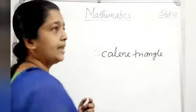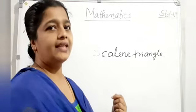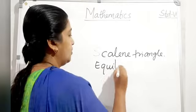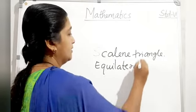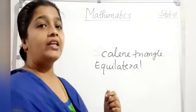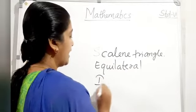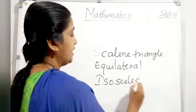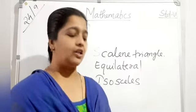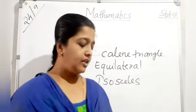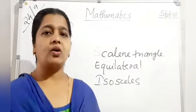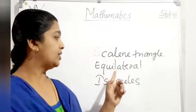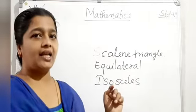When all three sides are equal, that is known as an equilateral triangle. An isosceles triangle — you must study the spelling: I-S-O-S-C-E-L-E-S — means any two sides are equal.